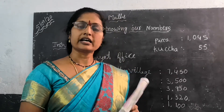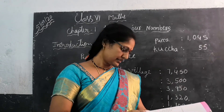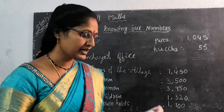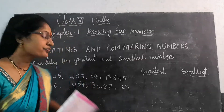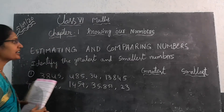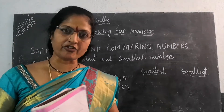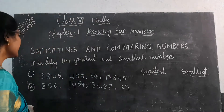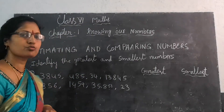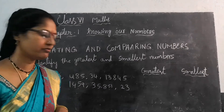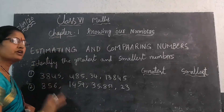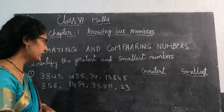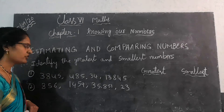Now again, I will explain page number 2 of your textbook — estimating and comparing numbers. If we find any different numbers, we compare them. In the identification of the greater and smallest number, if any digit numbers are in the row, then you will estimate which is the greatest number and which is the smallest number. Read all the numbers, children, one by one.